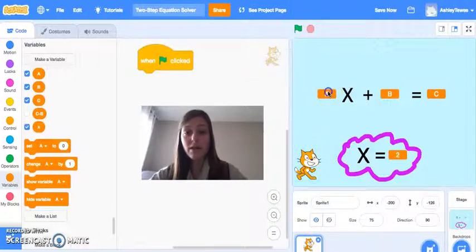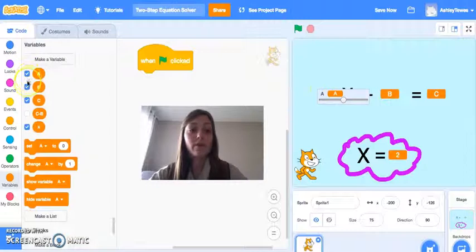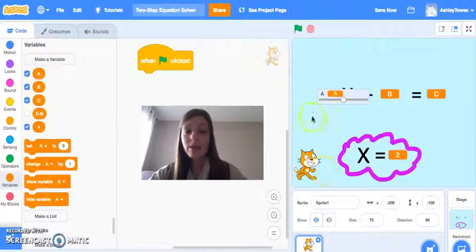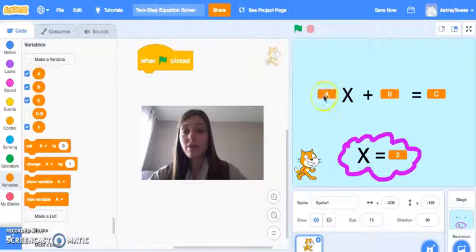The other thing that I did is once my variables were created, you'll notice on the left-hand side here, if they're checked, they appear on the screen. So you want our A value, B value, C, and X to appear on the screen. And if you double-click these variables, they change in their format. So I lined these up according to the variable that they will go with in the equation. So my A value goes before my X, my B is my constant, and my C is what my equation is equal to. And I put my X value on the bottom here.